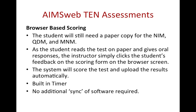With regard to browser-based scoring, the student will still need a paper copy of the Number Identification Measure, the Quantity Discrimination Measure, and the Missing Number Measure. As the student reads the test on paper and gives oral responses, the instructor simply clicks the student's feedback on the scoring form on the browser screen. The system will then score the test and upload the results automatically. There is a built-in timer and no additional sync of software is required.